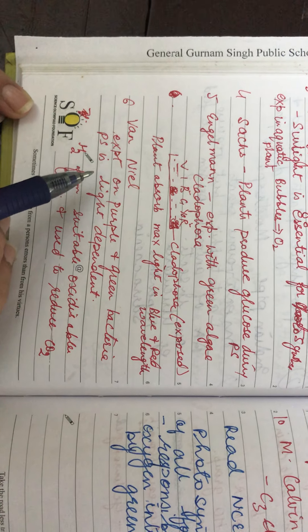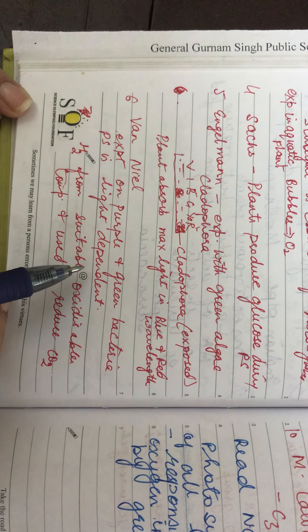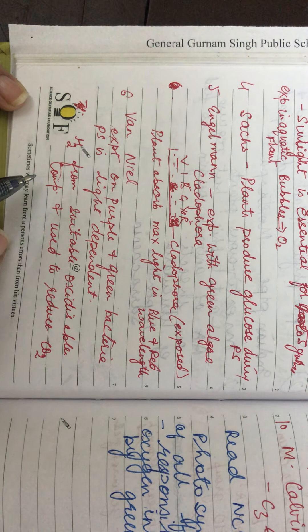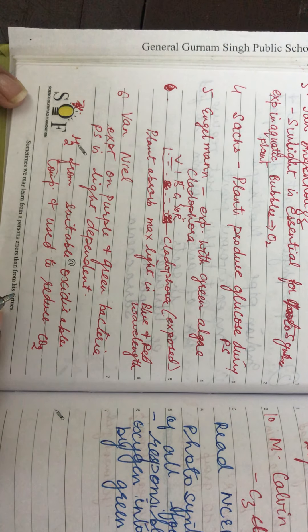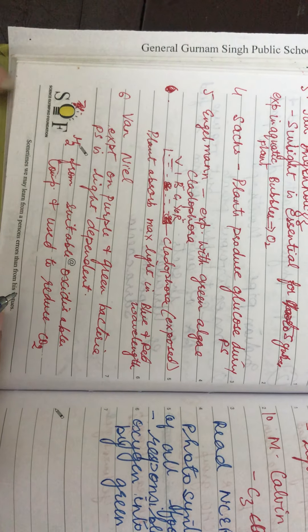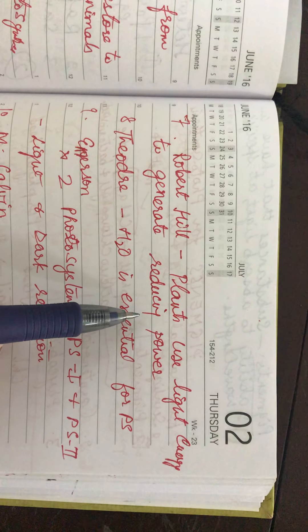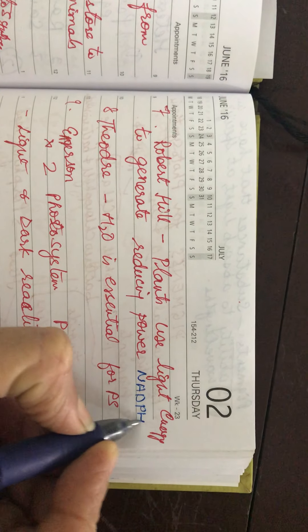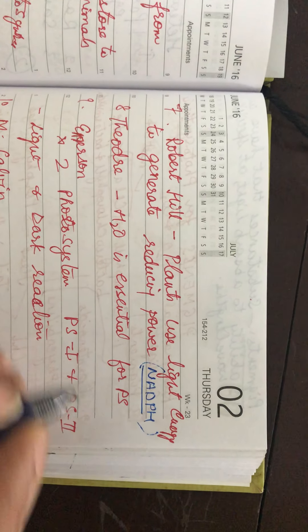Then Van Neel did an experiment on purple and green bacteria and said that photosynthesis is light dependent. Hydrogen from a suitable oxidizable compound is used to reduce carbon dioxide. We will cover this when we do the mechanism of photosynthesis. After that, Robert Hill said that plants use light energy to generate reducing power, which is NADPH — nicotinamide adenine dinucleotide phosphate hydrogen.